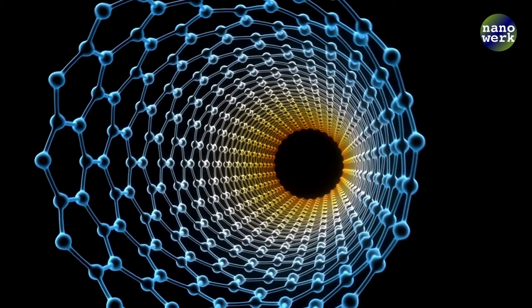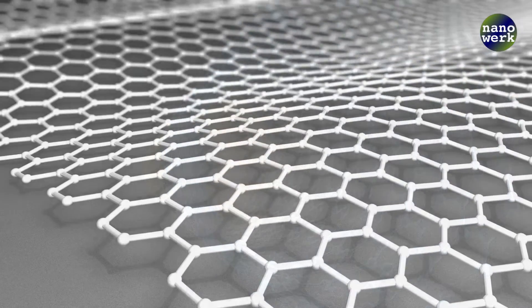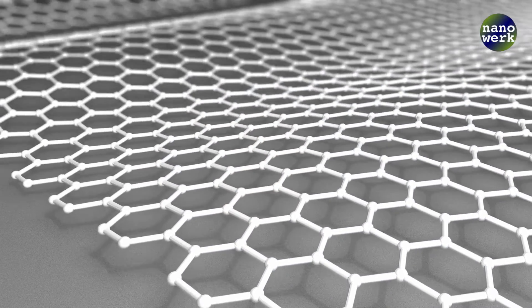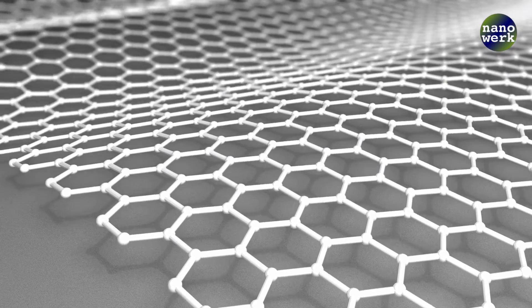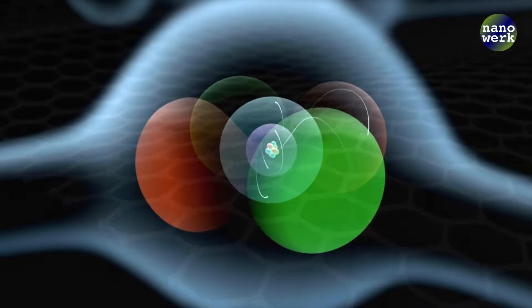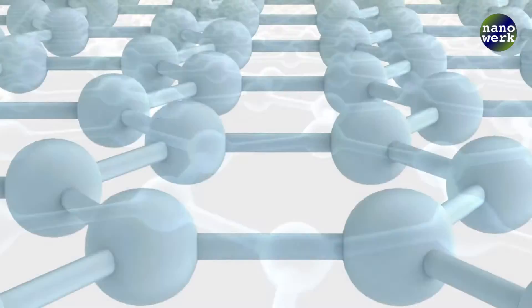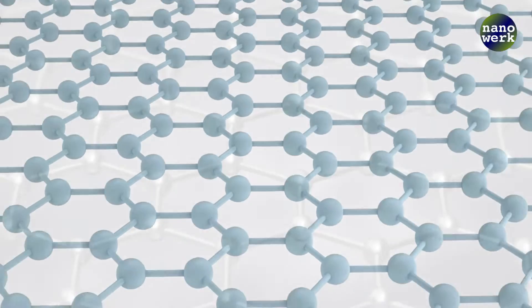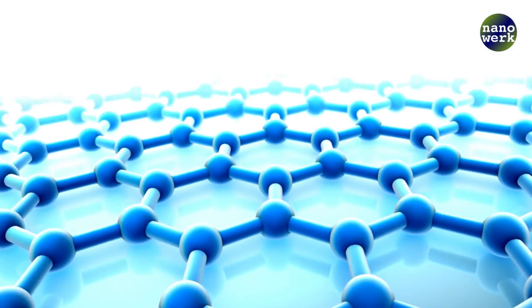Two-dimensional nanomaterials are like a flat and very thin sheet, just one atom thick. In these sheets, electrons can move freely left and right, forward and backward, but not up and down. It's this flatness that gives them some amazing abilities, like conducting electricity really well or being super strong for their size.